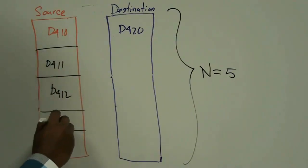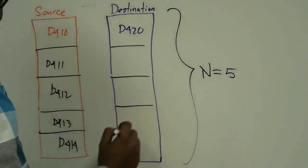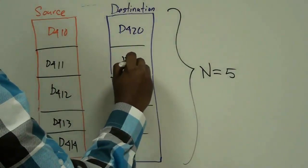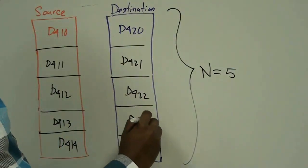For the right column, we have the table D420, D421, D422, D423, and D424.